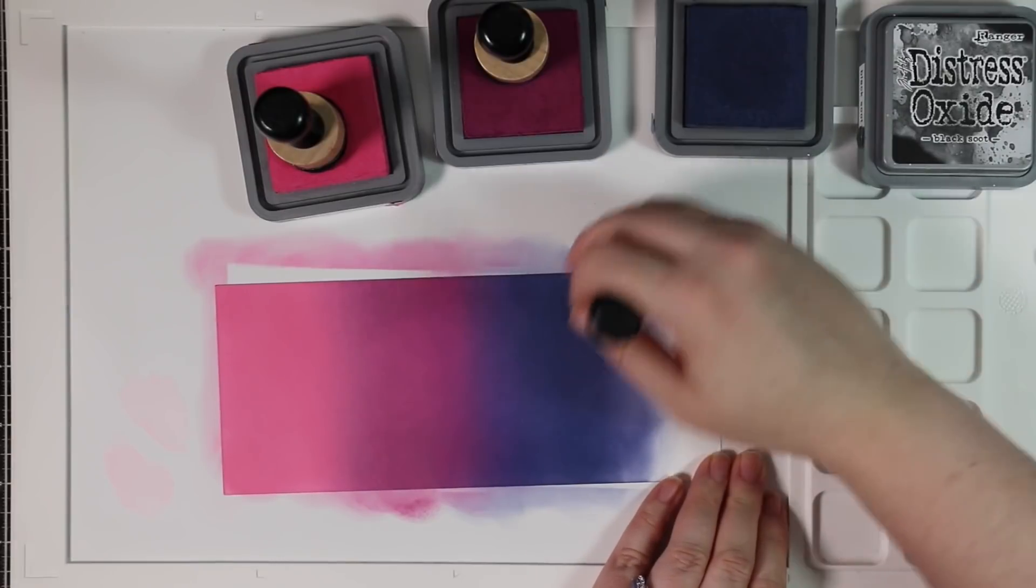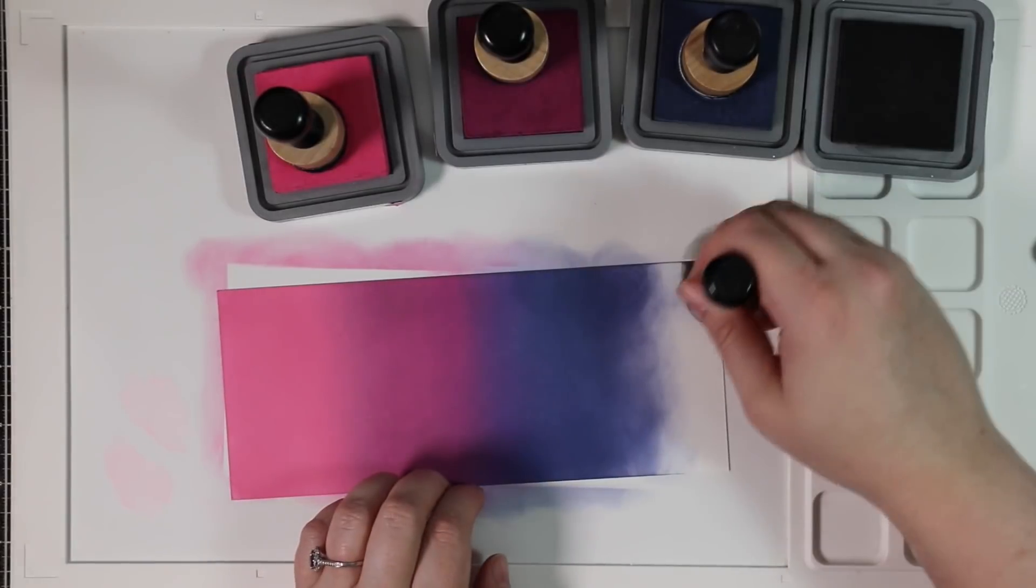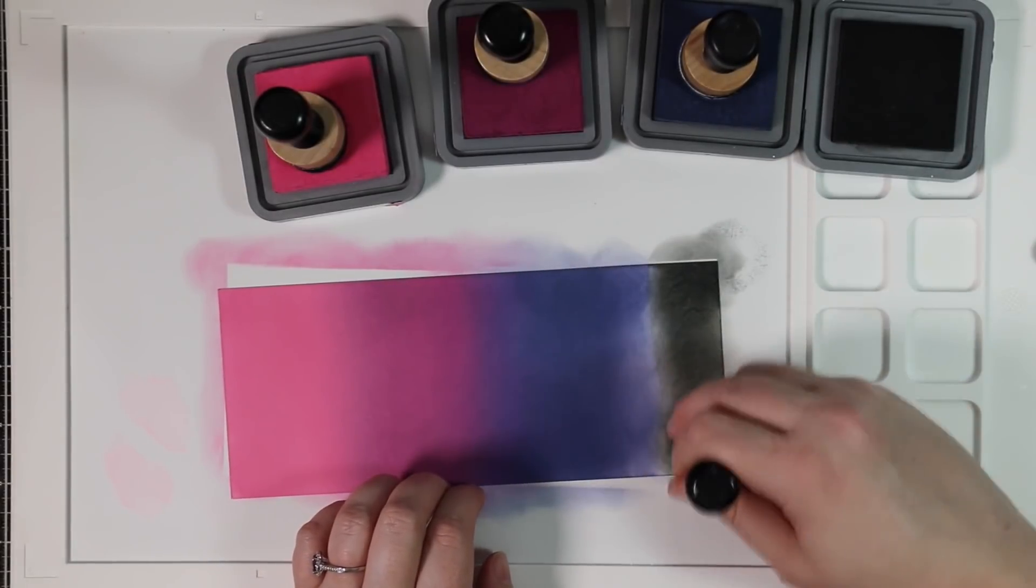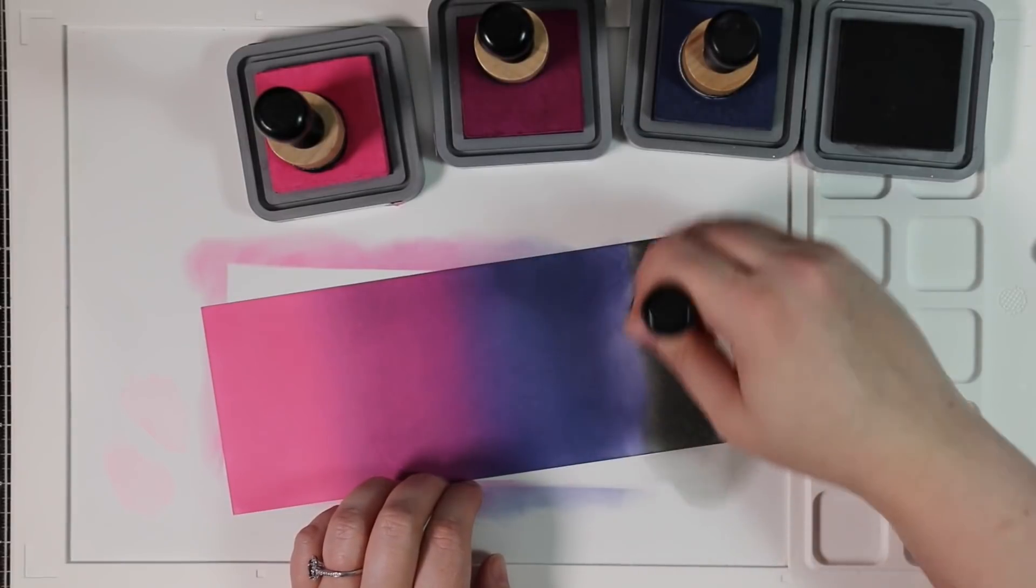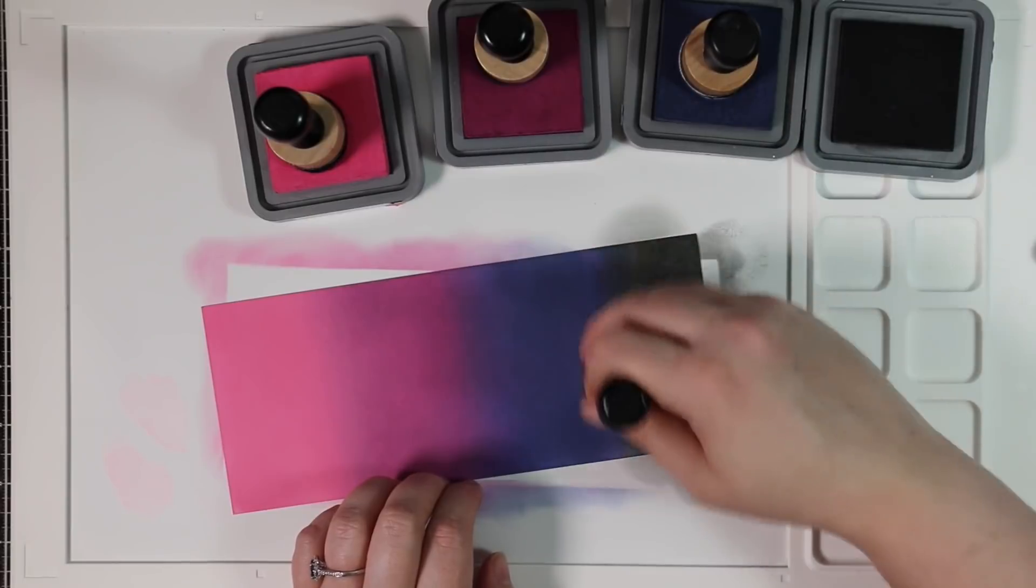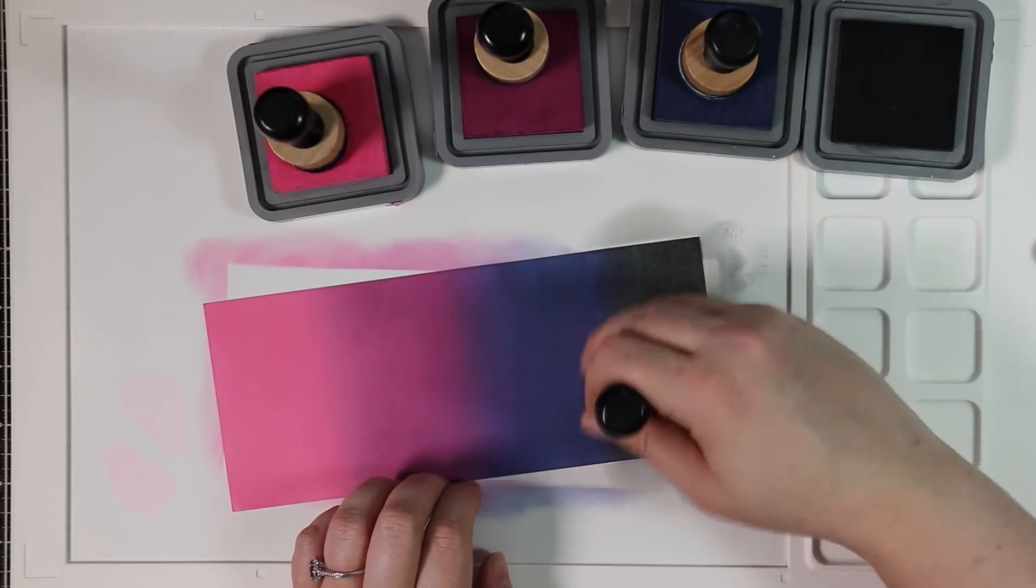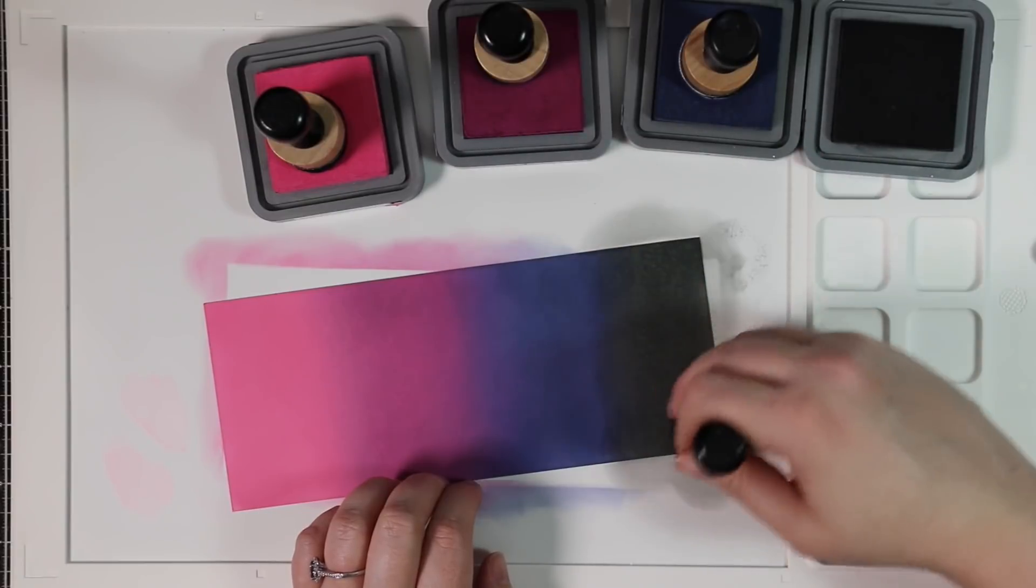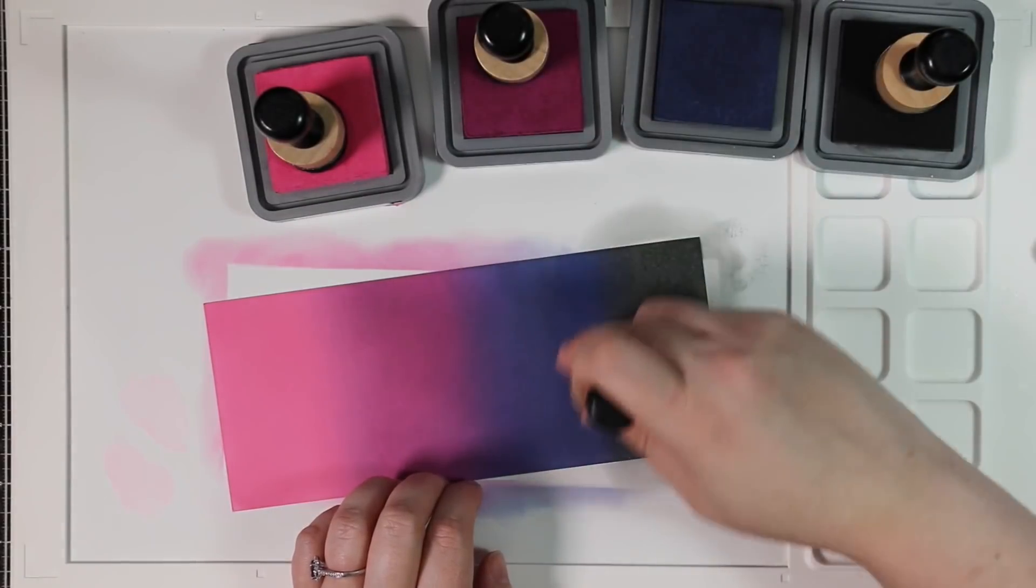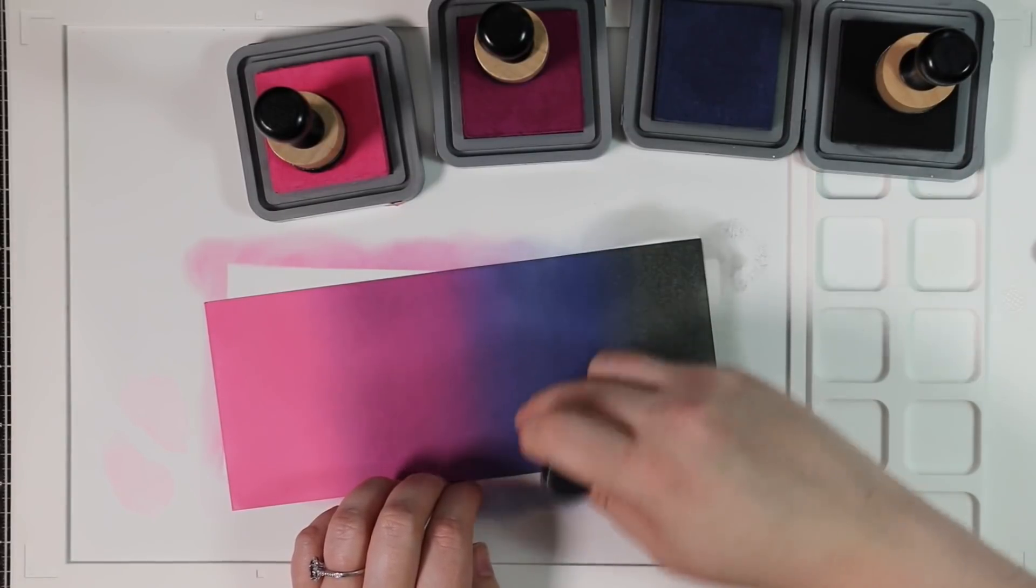So I blended on my colors. I'm working on my little Waffle Flower Water Media Mat because I like how it kind of grips the cardstock. And I started with the Picked Raspberry Distress Oxide there on the far left, and then I worked my way into Seedless Preserves, and then Chipped Sapphire, and then Black Soot. I'm blending them all in together, even though, as always, and I always complain about this, my camera makes it look like my blends are not as blended as they are.